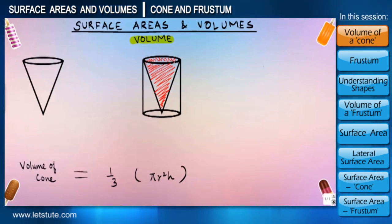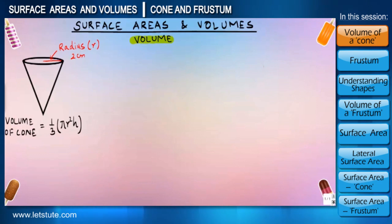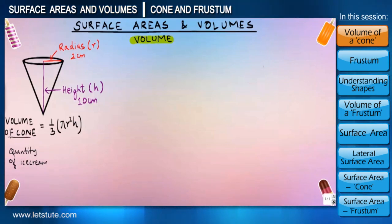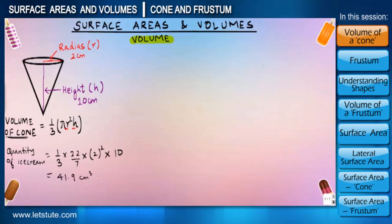So now say if the company decided to use a cone with the radius of 2 centimeters and keeps the height of the cone to be 10 centimeters, then the quantity of ice cream that can be filled to the brim of the cone is actually the volume of the cone itself. So all we have to do is substitute these values of radius and height into this formula 1/3 pi r square h, and what we'll get is 41.9 centimeter cube or if we round it up then it is 42 centimeter cube of ice cream or 42 centimeter cube is the volume of the cone.